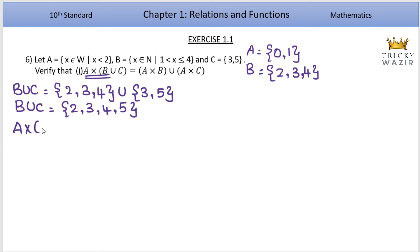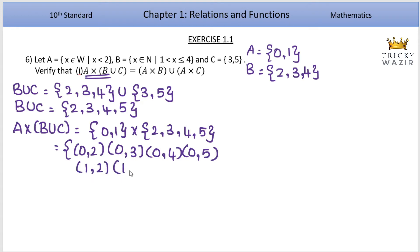A cross B union C. A elements 0,1 cross B union C elements 2,3,4,5. This gives us 0,2, 0,3, 0,4, 0,5, 1,2, 1,3, 1,4, 1,5.